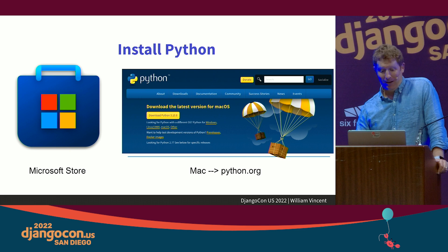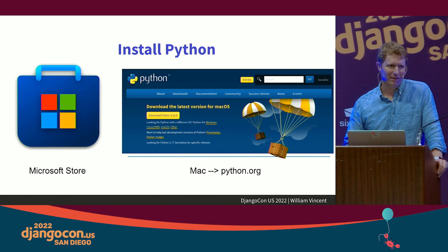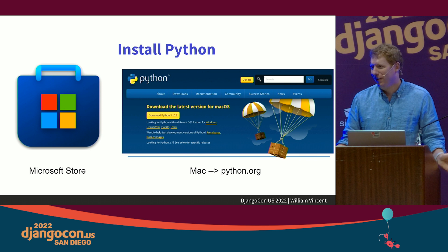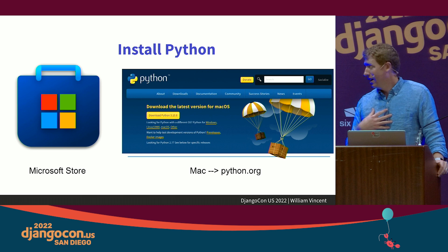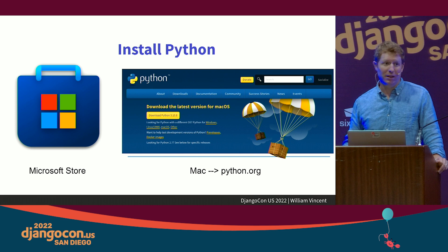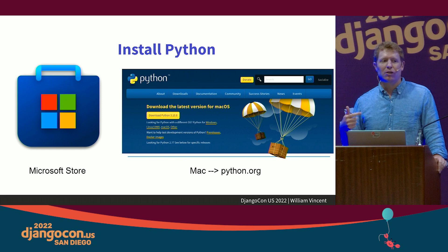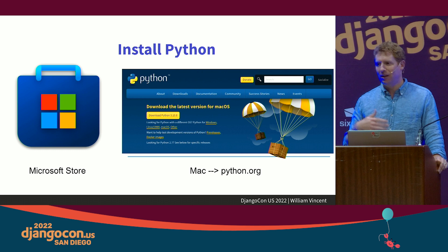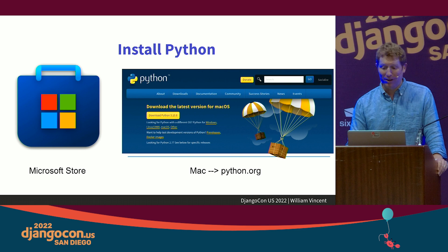Python — this is another one that's super easy to overlook but just stops people cold. If I asked this room how to install Django I'd easily get half a dozen different answers. For beginners, the two options I'd recommend: on Windows, the Microsoft Store now lets you install Python easily and sets your PATH. On Mac, I'd recommend the official installer rather than Homebrew, which has issues now. As you get more advanced you'll need things like pyenv, but that will get you started.